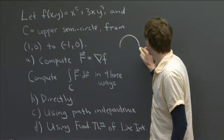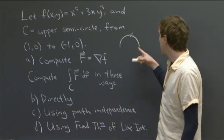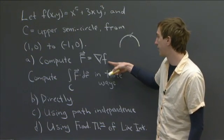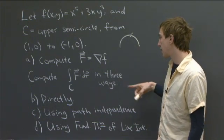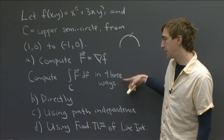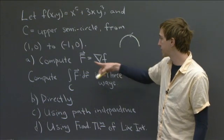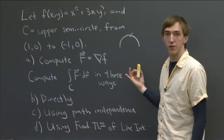So it's this upper semicircle here that we often consider. And so the first thing that we want to do is to just compute the gradient capital F to be the gradient of this function f. And then parts b through d, we're going to compute this line integral of this vector field F along this curve c. We're going to compute it in three different ways.